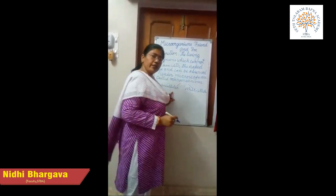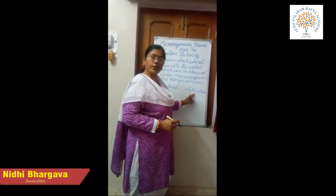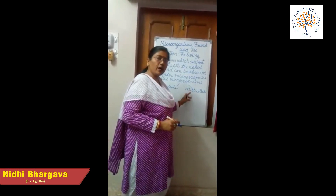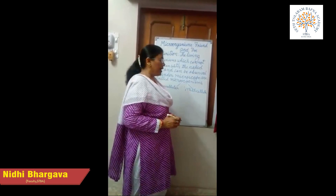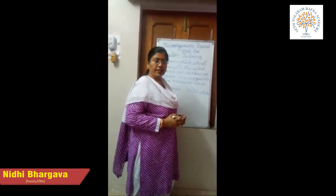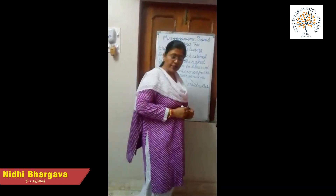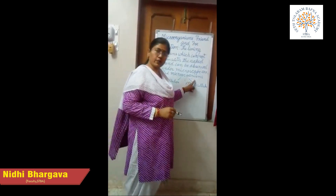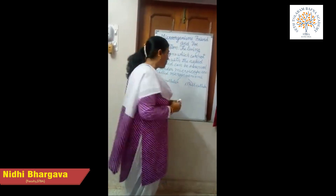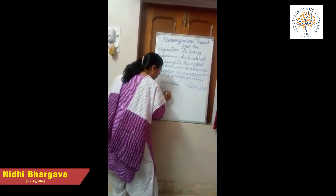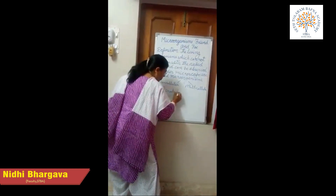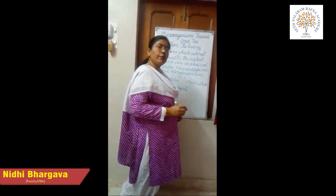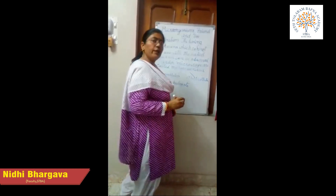Unicellular means single-celled and multicellular means they consist of many cells. The scientist who studied microorganisms was A.V. Leeuwenhoek, in the year 1674. The people who study microorganisms are called microbiologists, and the study of microorganisms is called microbiology.